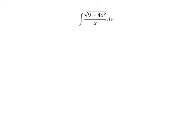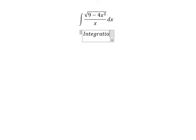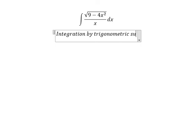Hello everybody. Today I will talk about calculus. The topic today is about the integral. We have the integral of the square root of 9 minus 4s squared over s ds. I will show you the technique to answer the question — we need to use integration by trigonometric substitution.